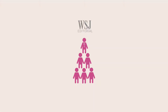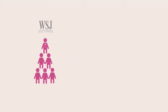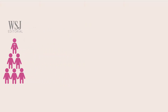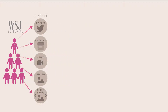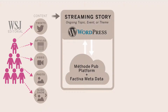Let's start off with how Streams works. It begins with the WSJ editorial team who needed a way to publish in real time various news content, such as tweets, articles, videos, photos, updates, and photo slideshows. With that news content, we built the Streaming Stories with the concept of ongoing topic, event, or theme, such as Olympics or Hurricane Sandy or the financial markets, and allow the user to always be updated with real time published content.